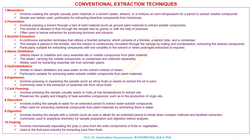Soxhlet extraction is a continuous extraction technique that utilizes a Soxhlet extractor, which consists of a thimble, a siphon tube, and a condenser. The sample is placed in the thimble, and the solvent is continuously circulated through the sample by boiling and condensation. It is particularly suitable for extracting compounds with low solubility in the solvent or when prolonged extraction is required.